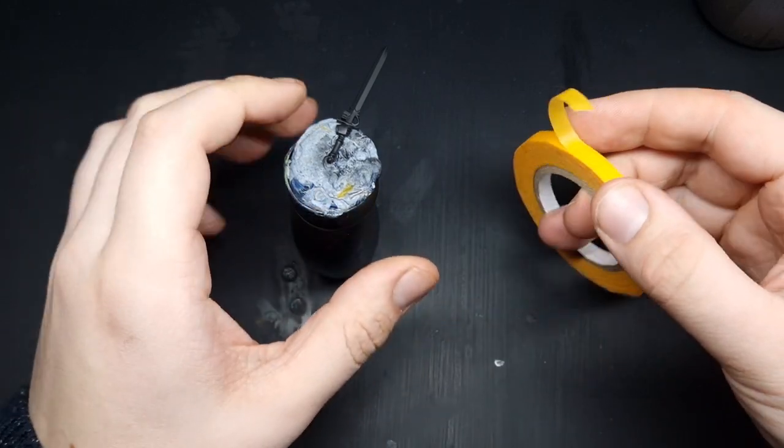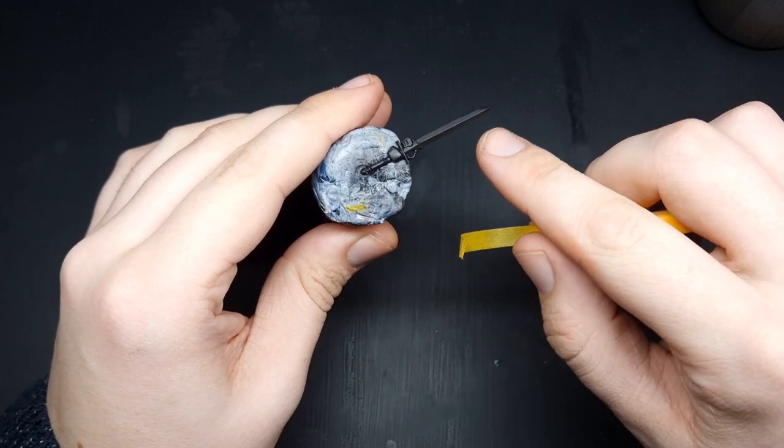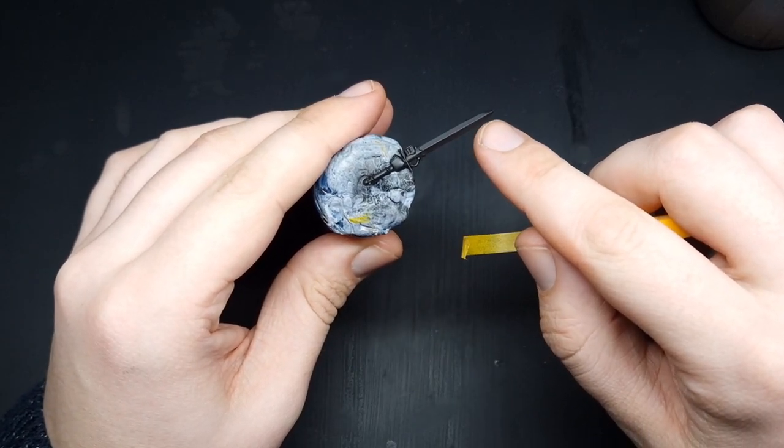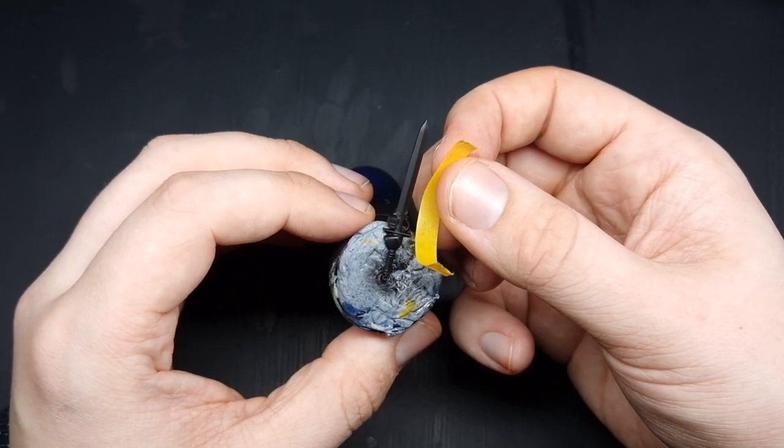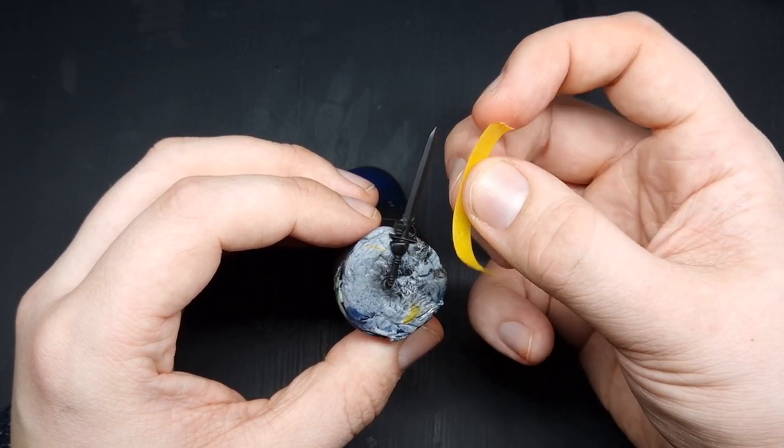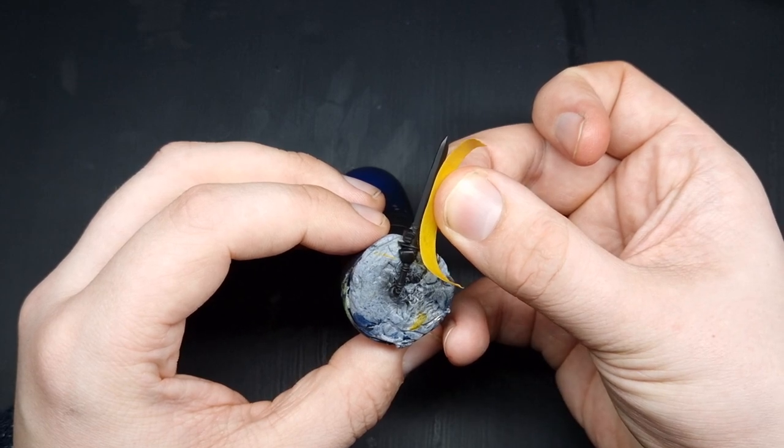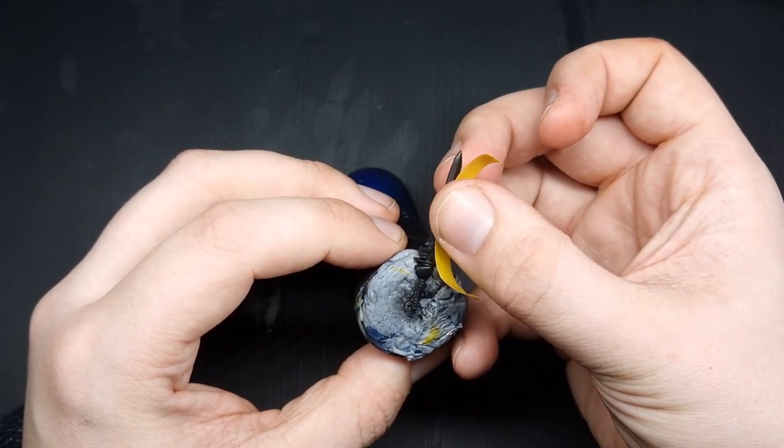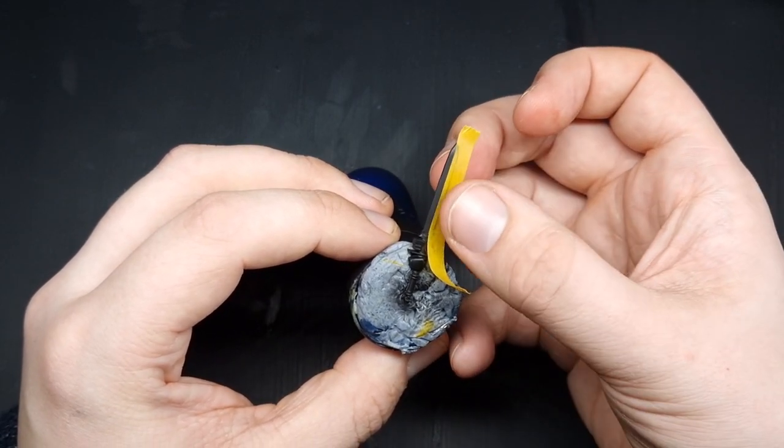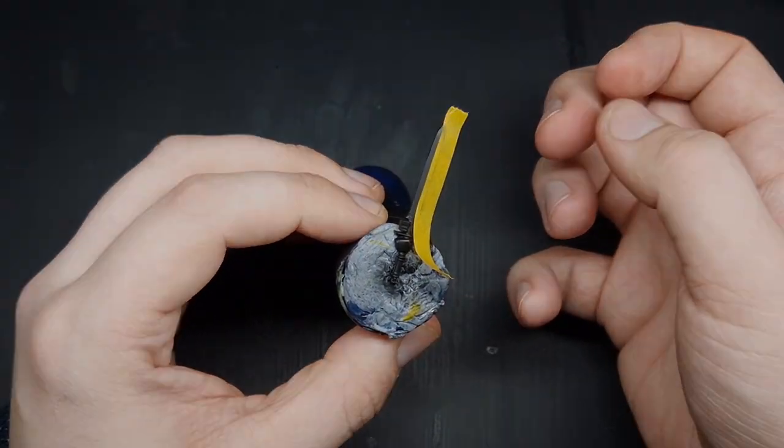We're going to lay this on one end of the sword following along this fuller in the sword here. Now I'll be honest, this part is a little bit fiddly, but just make sure that you line it up with that fuller and just run that along the sword there like that.